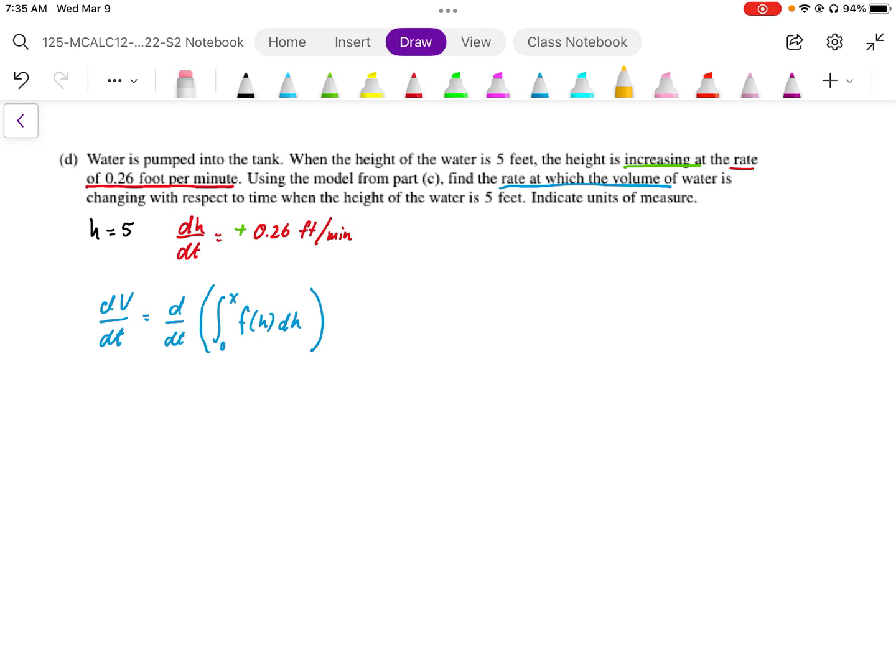And they also give us the rate of dH by dt. And this is going to be 0.26, and it's increasing. So make sure that we understand that it's a positive rate.